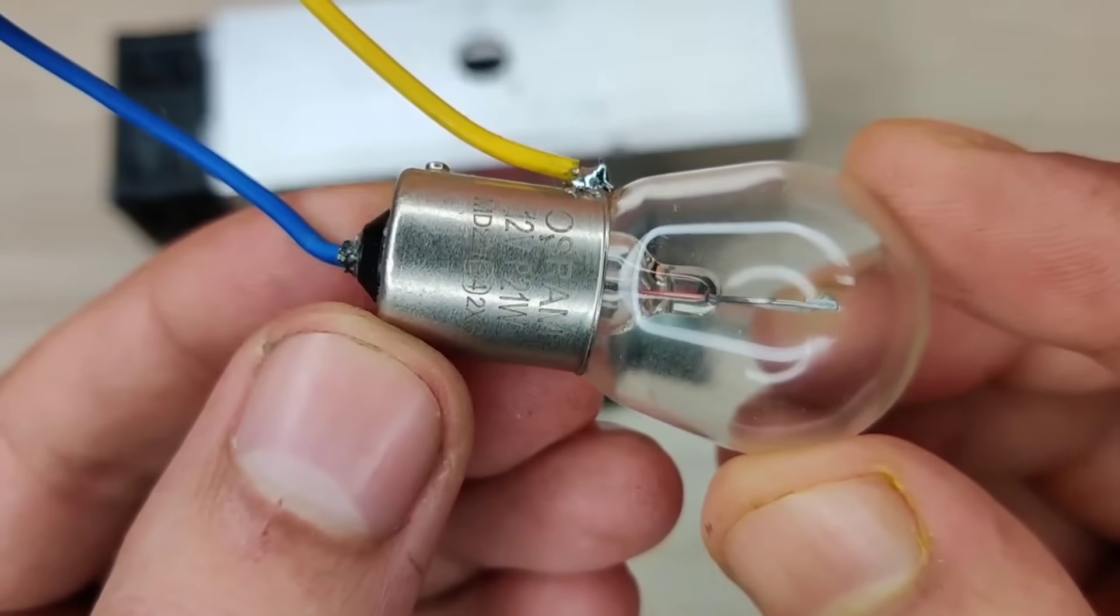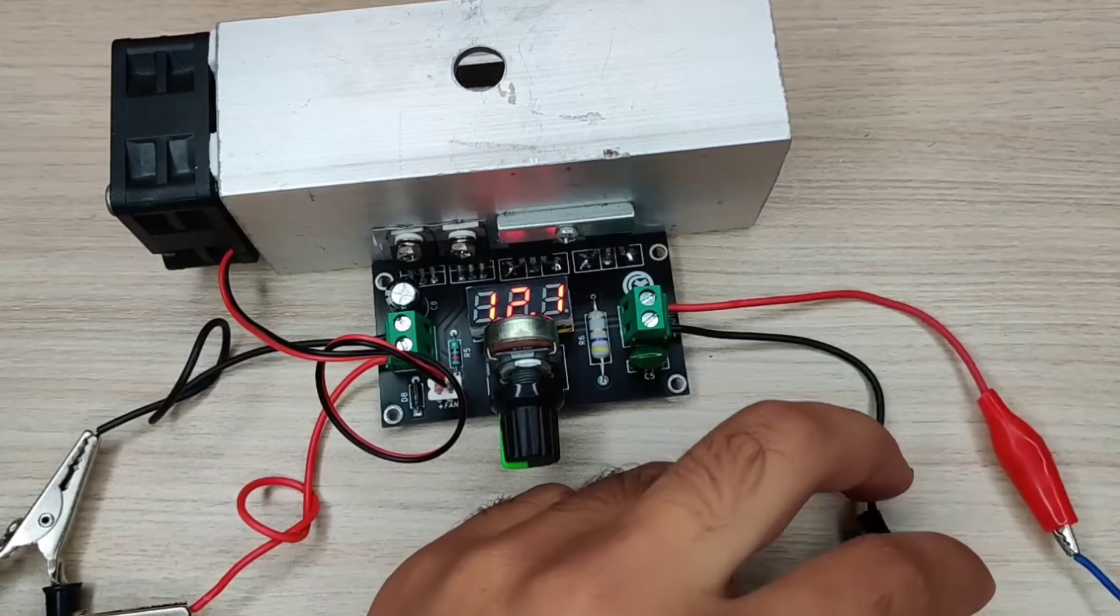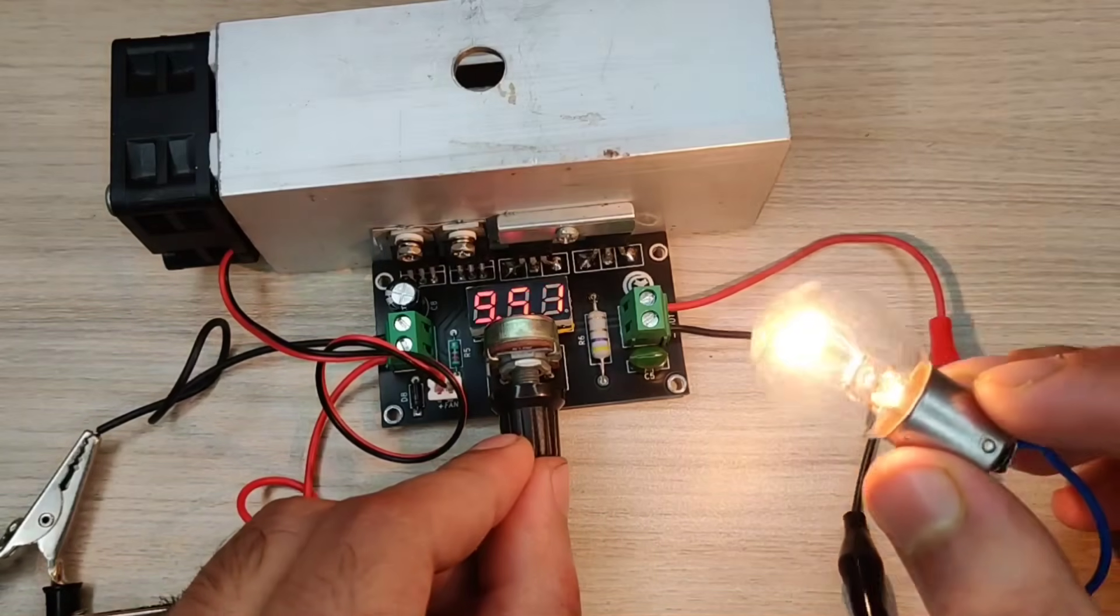In the first test I used a 21 watt bulb which consumes about 2 amperes of current. As you can see you can control brightness by adjusting the output voltage.